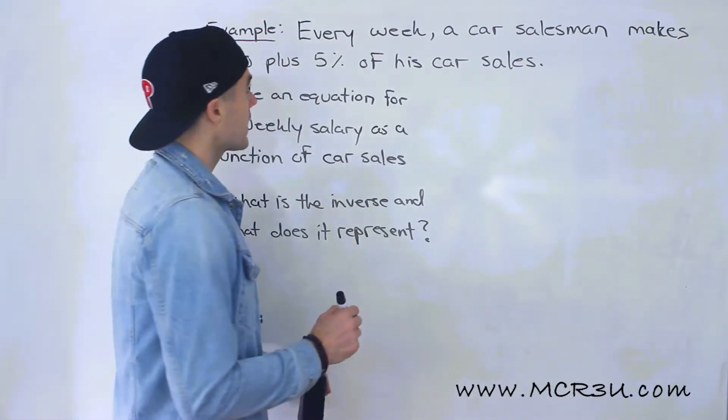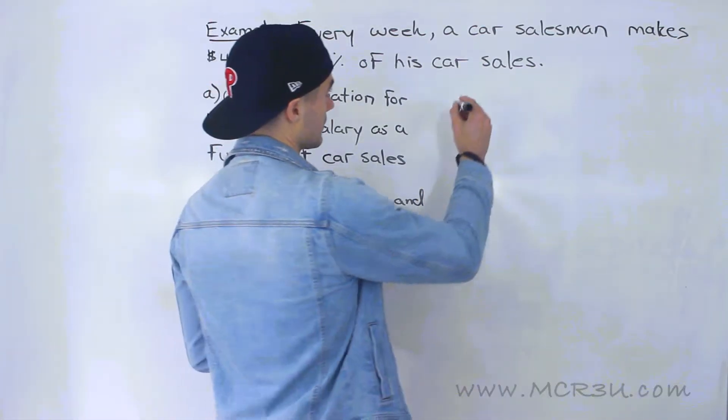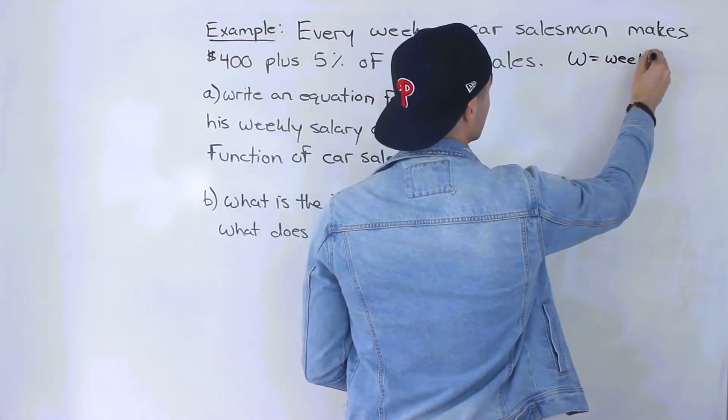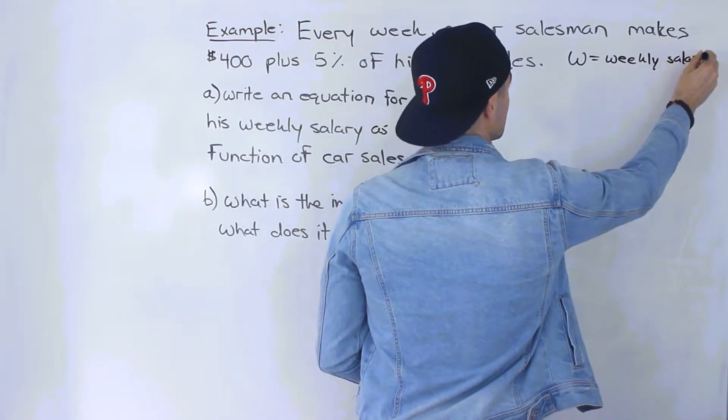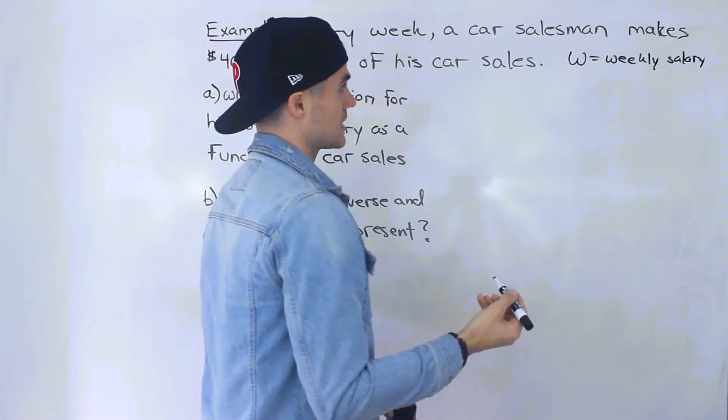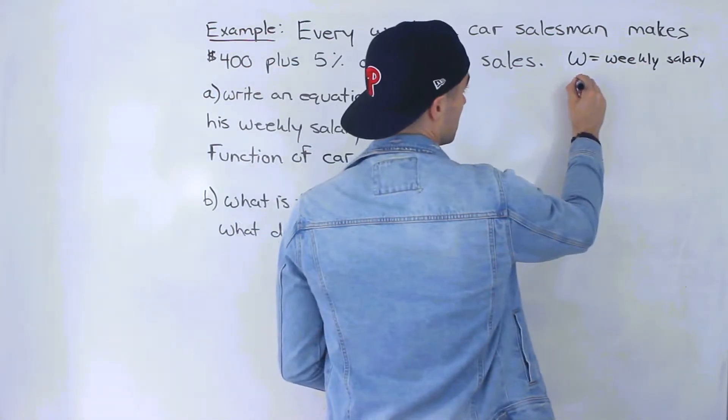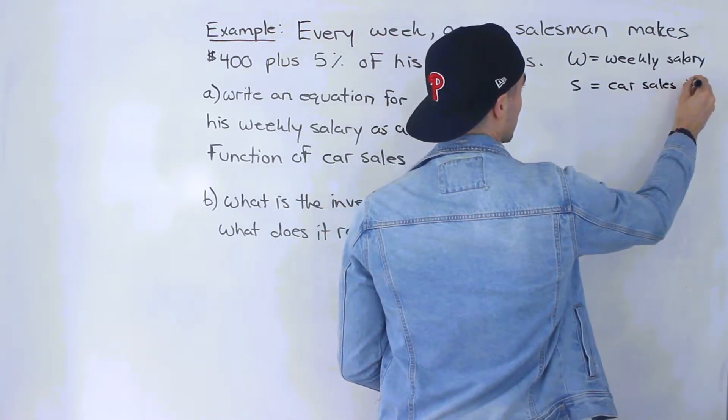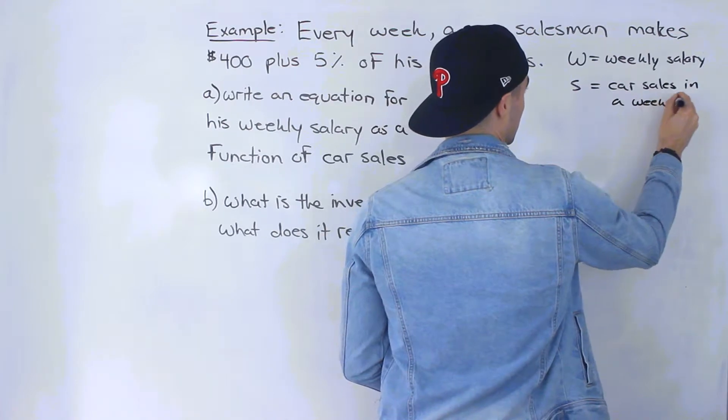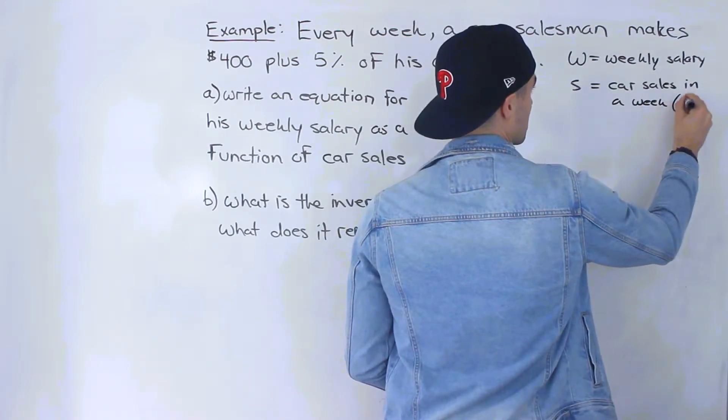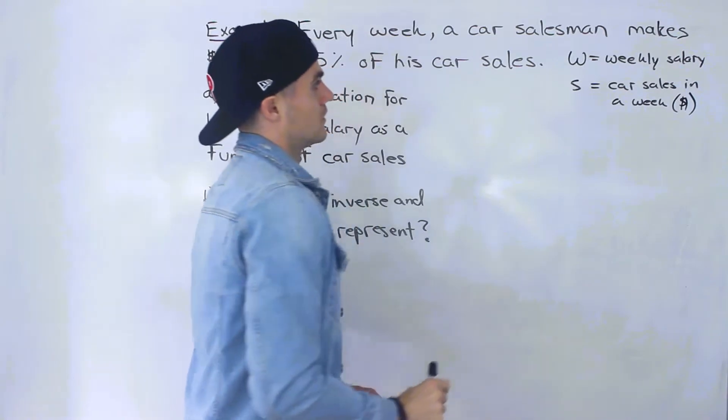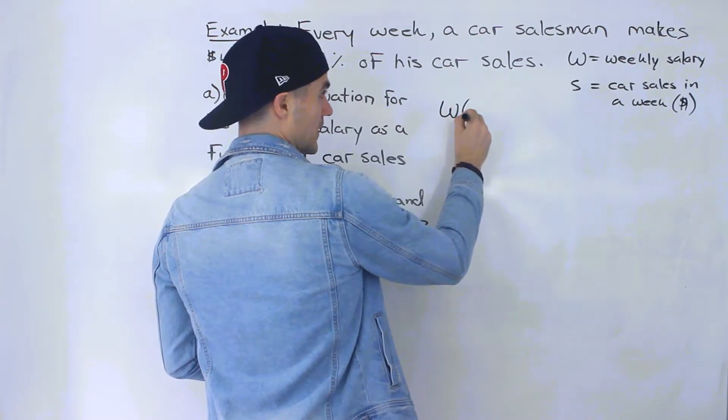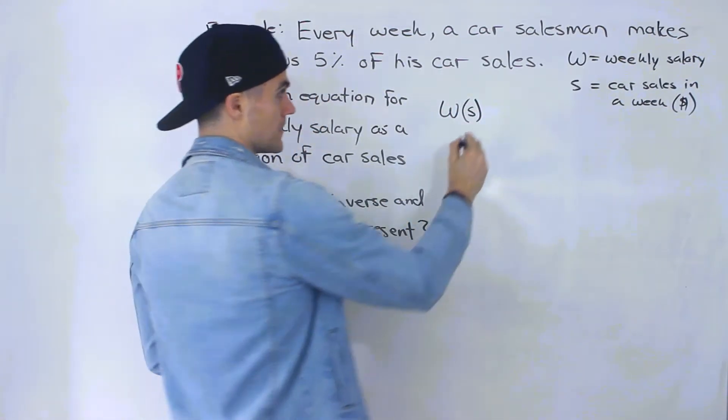So for part A, let's introduce some variables here. I'll do it up here. Let W equal the weekly salary. Doesn't really matter what letters you use. I'll just use W here because I'm going to let S equal the car sales in a week. And this is in dollar terms.